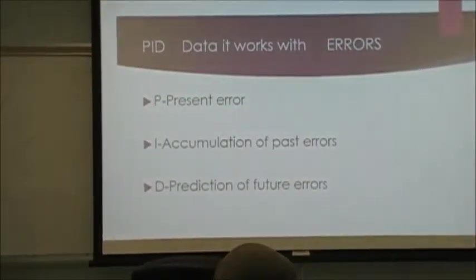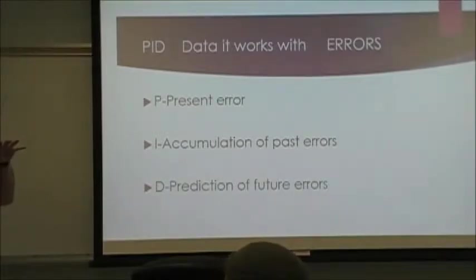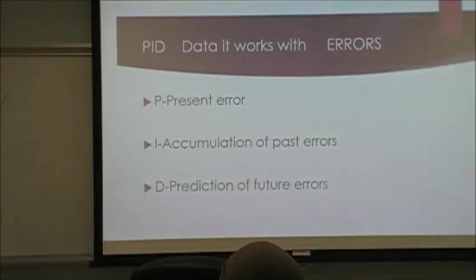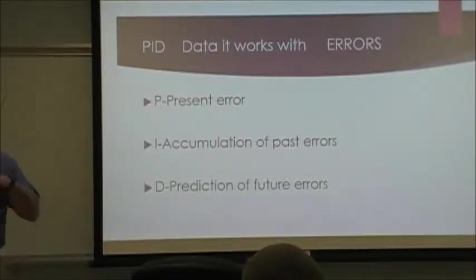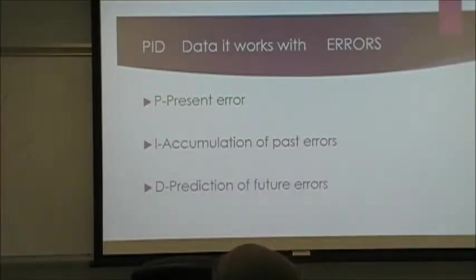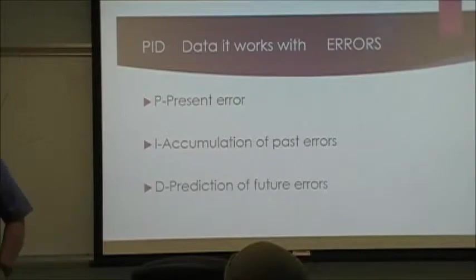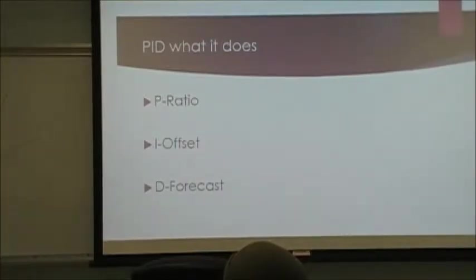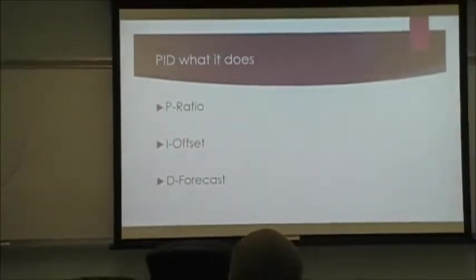PIDs work on errors — you're either on target or you're away from target. That's all it knows: on or away. The P portion looks at the present error, the error right now. The I portion looks at past errors or a history of errors. If you're tuning a PID, it'll have accumulated errors in a field on your software screen. And then the D predicts what the future error is going to be so it can have the authority to make the control go where it needs to go. P is a ratio, I is an offset, and D is a forecast.